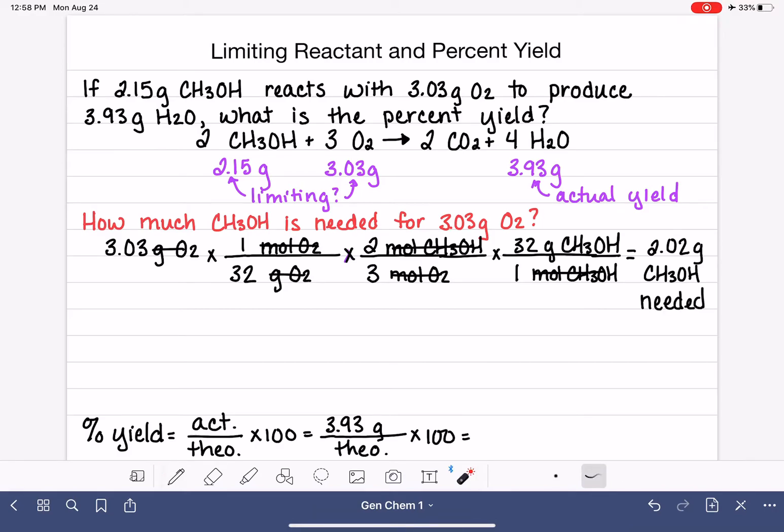Do we have enough? It looks like we do. We need 2.03 grams, and we have plenty. Because we have plenty of CH3OH, we know that this is our excess reagent, and this is our limiting.